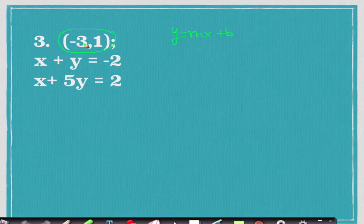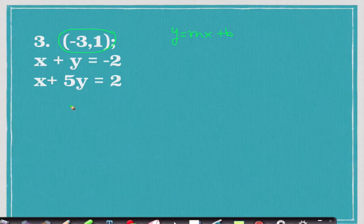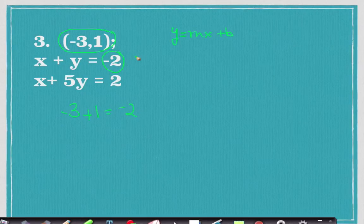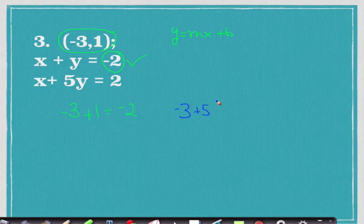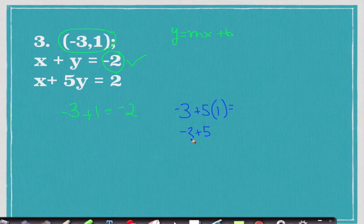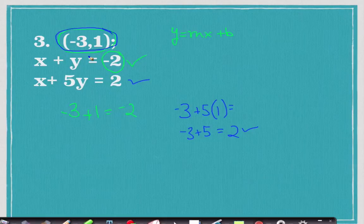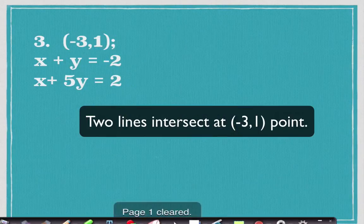All we're asked to do is check if this point is a solution for both equations. I'm going to replace each x with negative 3 and each y with 1. For the first equation: negative 3 plus 1 equals negative 2 — yes, that checks out. For the second: negative 3 plus 5 times 1 equals 2 — yes, that also checks out. So this coordinate point is a solution for this system of equations.